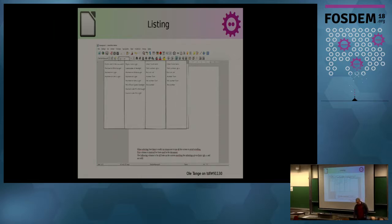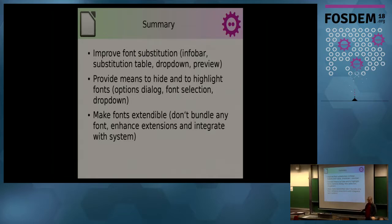To summarize we need improvements on the font substitution: an info bar, the substitution table should be more easily accessible, the drop down would need some love, and the preview is really nice to have - that's actually what the user wants. We need means to hide and highlight fonts: hide unused, highlight favorites. This should go into the options dialog and the font selection drop downs. All this stuff has to be reworked. And the last thing is the font extension thing so that we do not need to ship fonts. That's all, thank you.